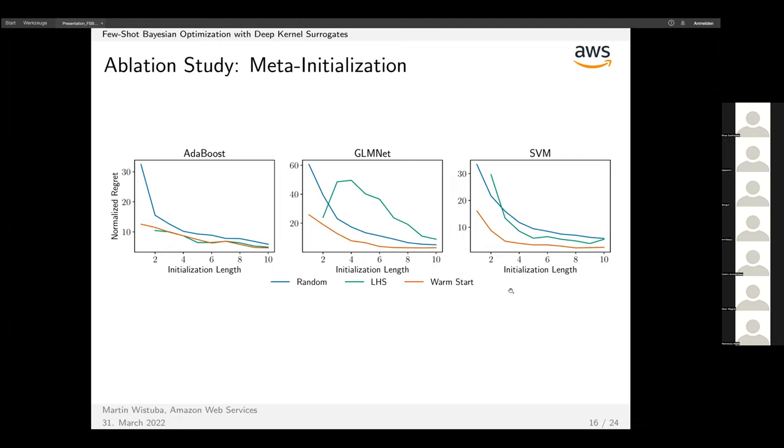We looked into how useful warm start actually is and compared against two other commonly used methods: random and Latin hypercube sampling. It's not surprising to see that warm start works better. The difference—AdaBoost is the exception, potentially because the search space is relatively small with only two hyperparameters.